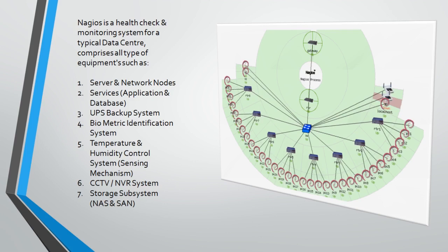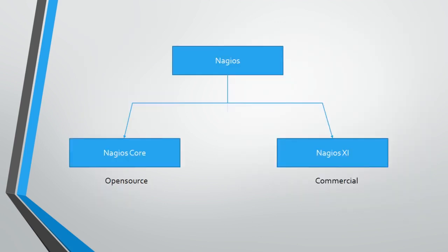This is the main topic to concentrate on: Nagios has two flavors. The first is Nagios Core, which is an open source product. The second is Nagios XI — also called Nagios 11 — which is a commercial, licensed product.